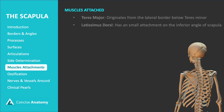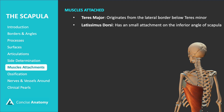The teres major muscle originates from the lateral border of the scapula, just below the teres minor, and is responsible for medial rotation and adduction of the arm. The latissimus dorsi, a large broad muscle originating from the lower back, has a small attachment on the inferior angle of the scapula. It inserts into the intertubercular groove of the humerus, contributing to arm extension, adduction, and internal rotation.